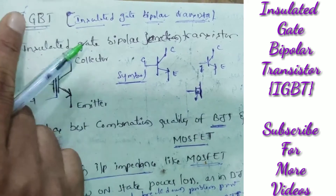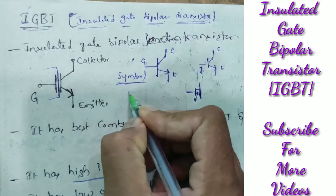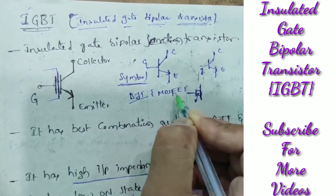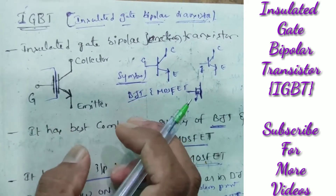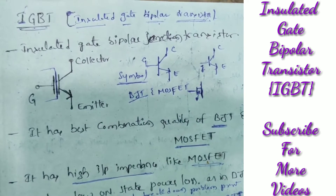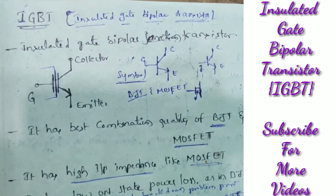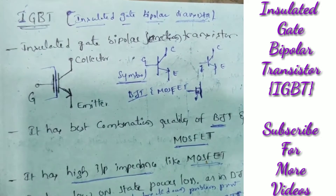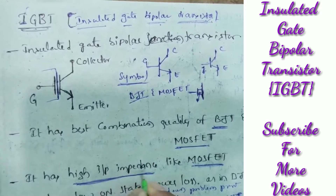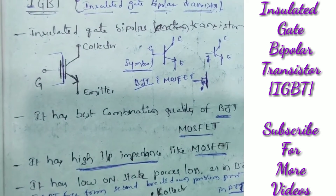Coming to why we are using IGBT rather than BJT — this IGBT has the advantages of both BJT and MOSFET. The BJT has the advantage of low on-state power loss. The MOSFET has the advantage of high input impedance. These two advantages are combined in the IGBT. That is why we use the insulated gate bipolar transistor.